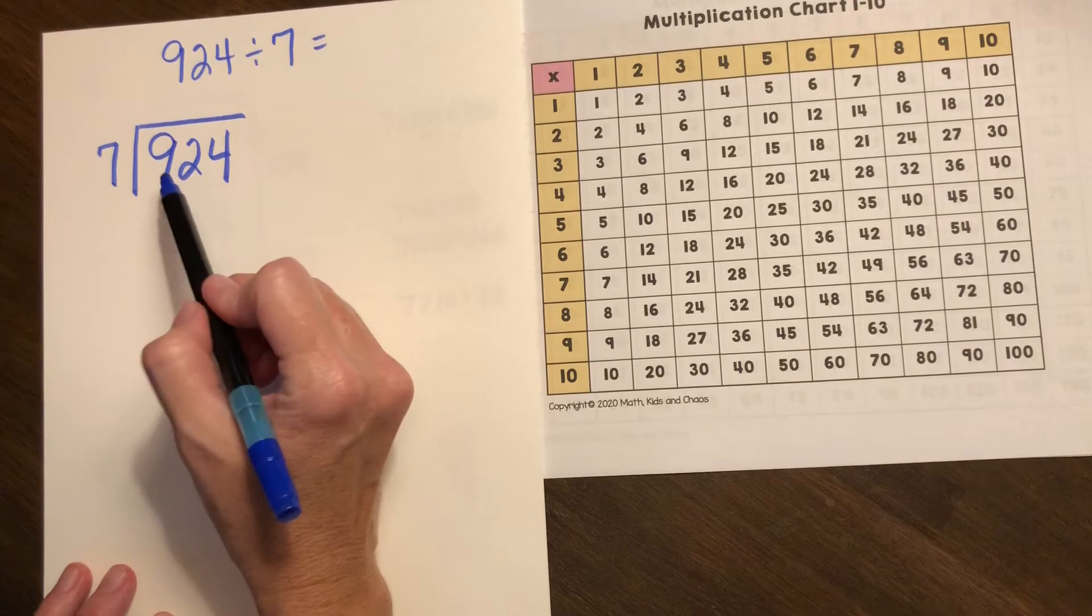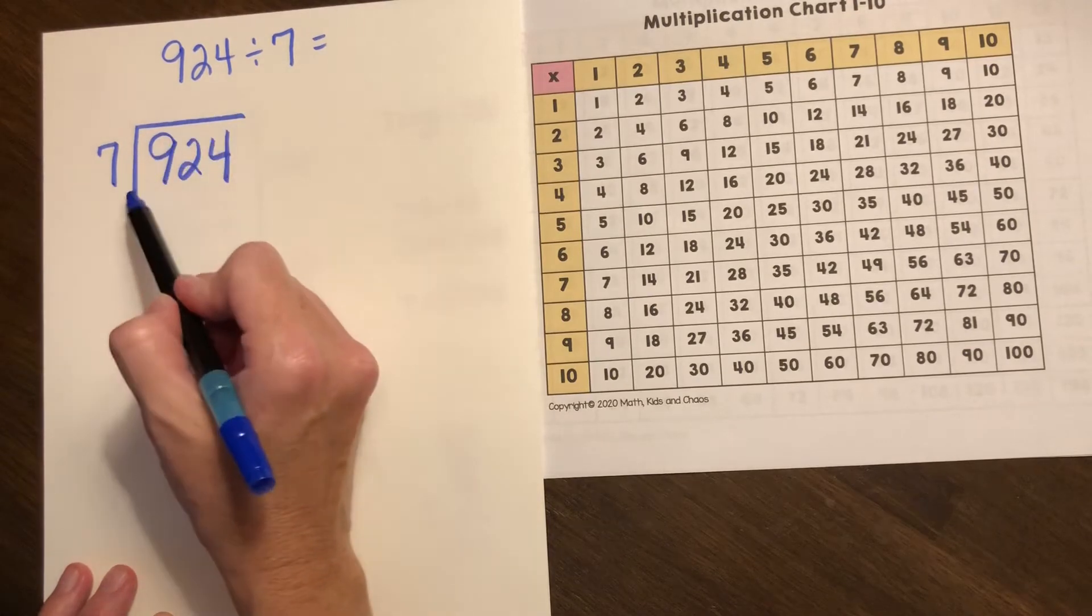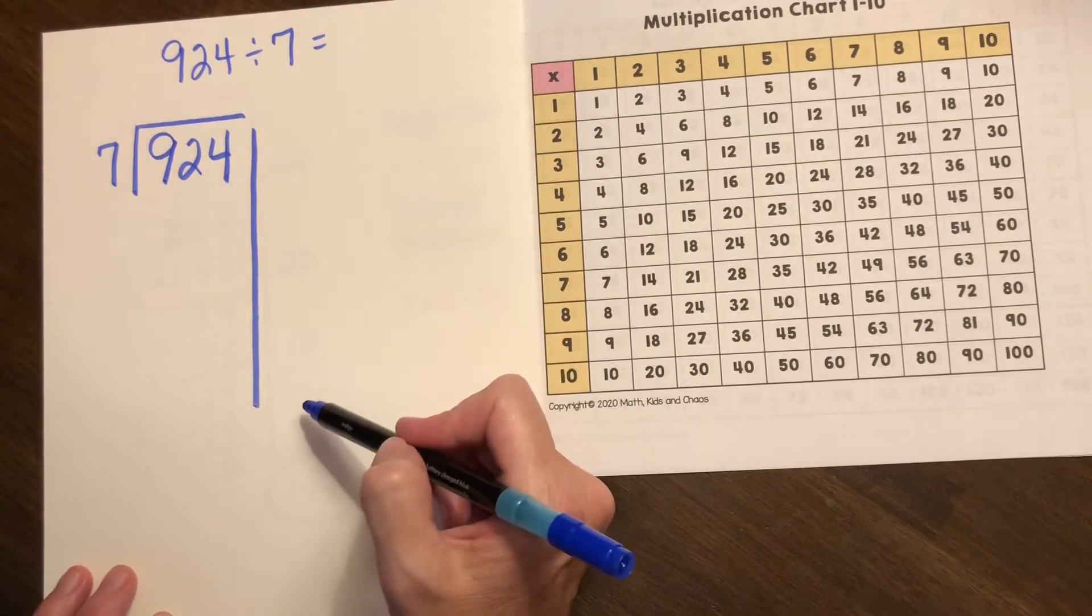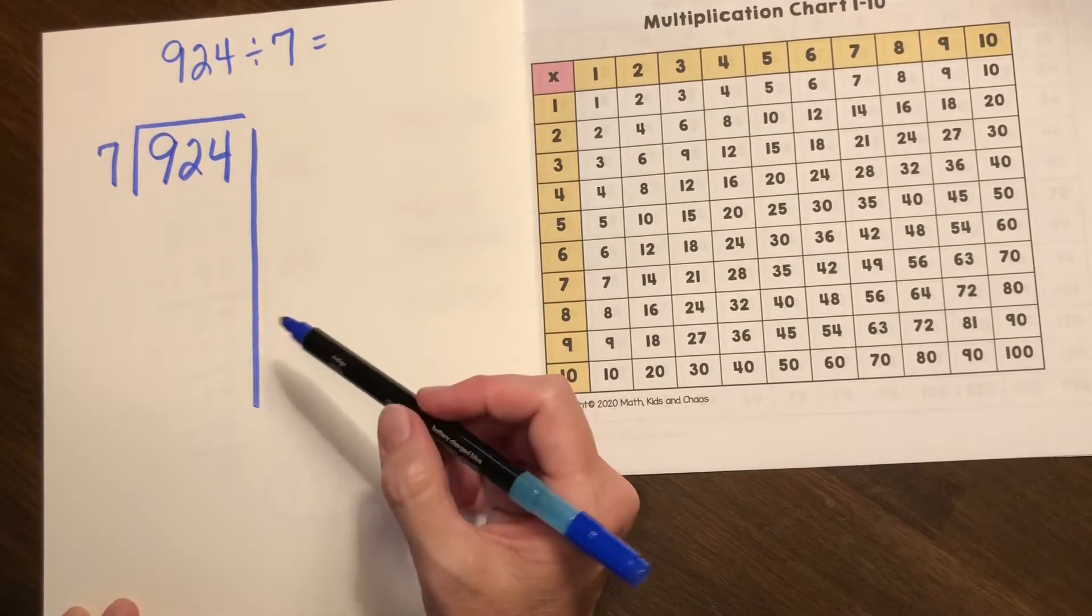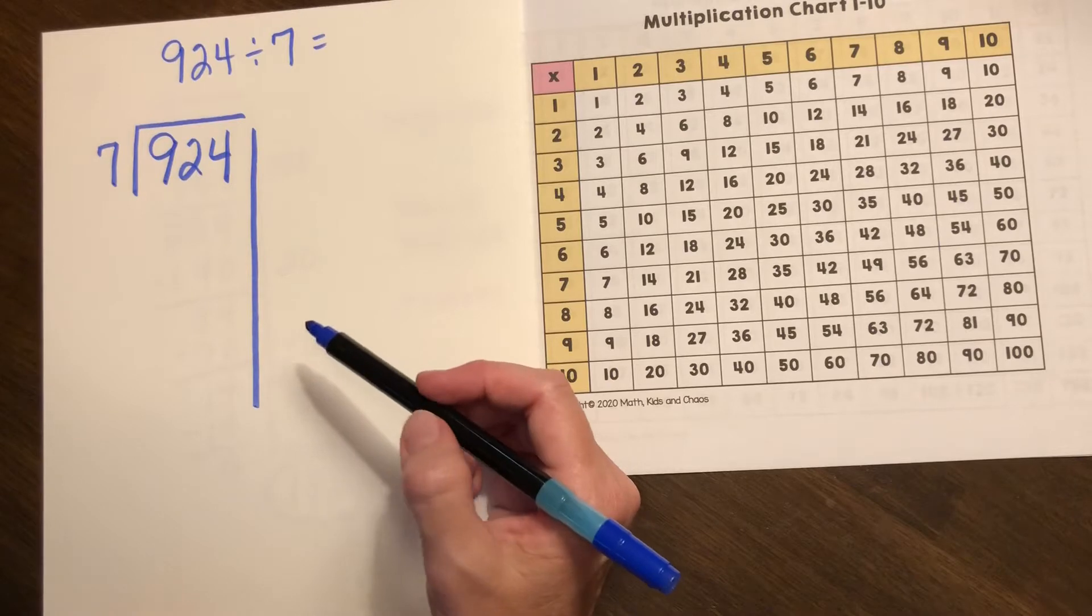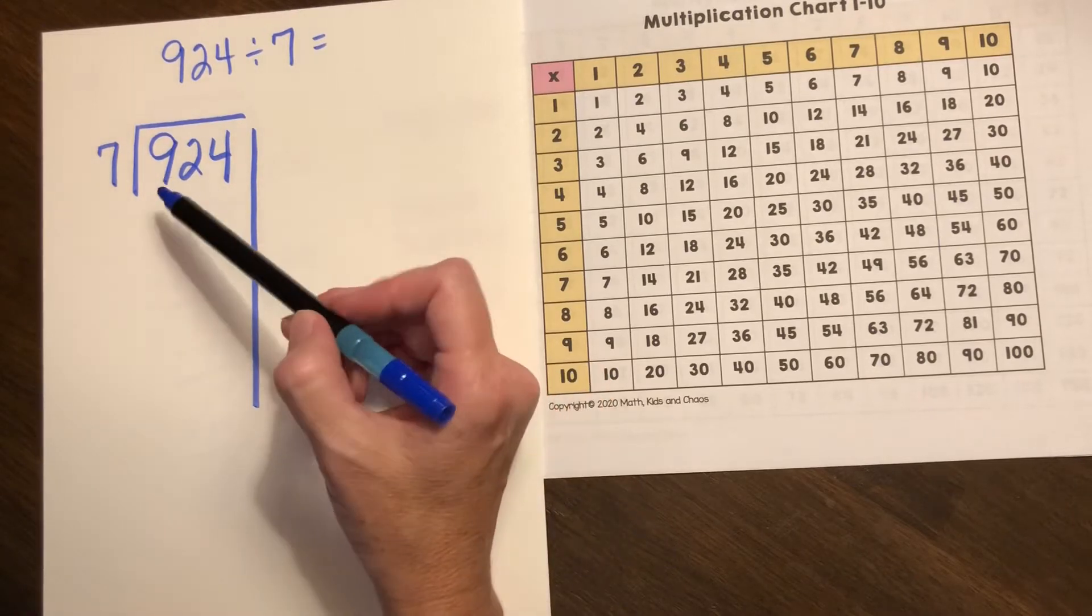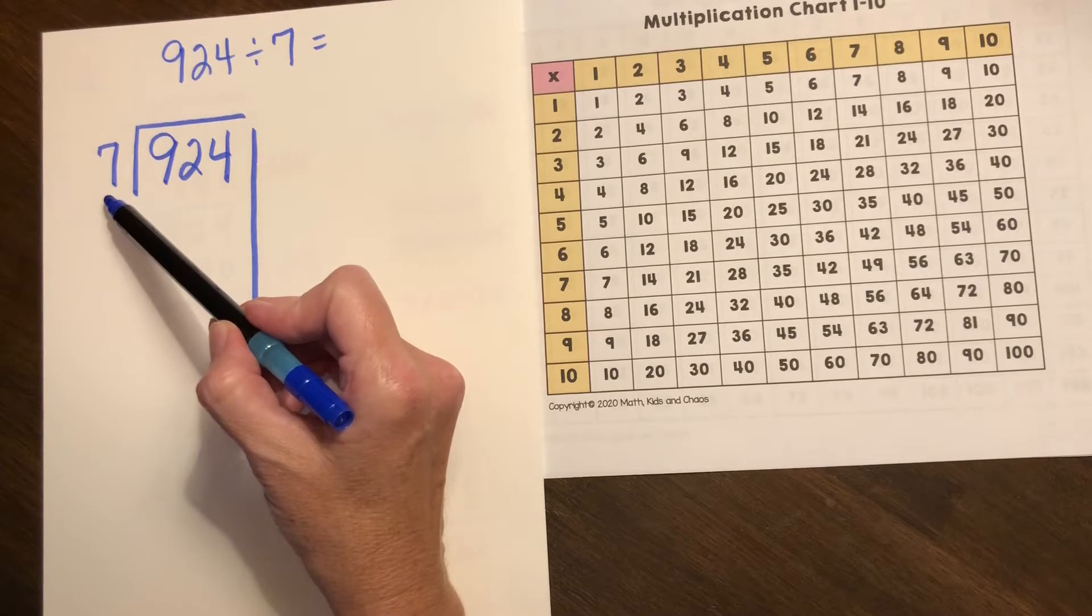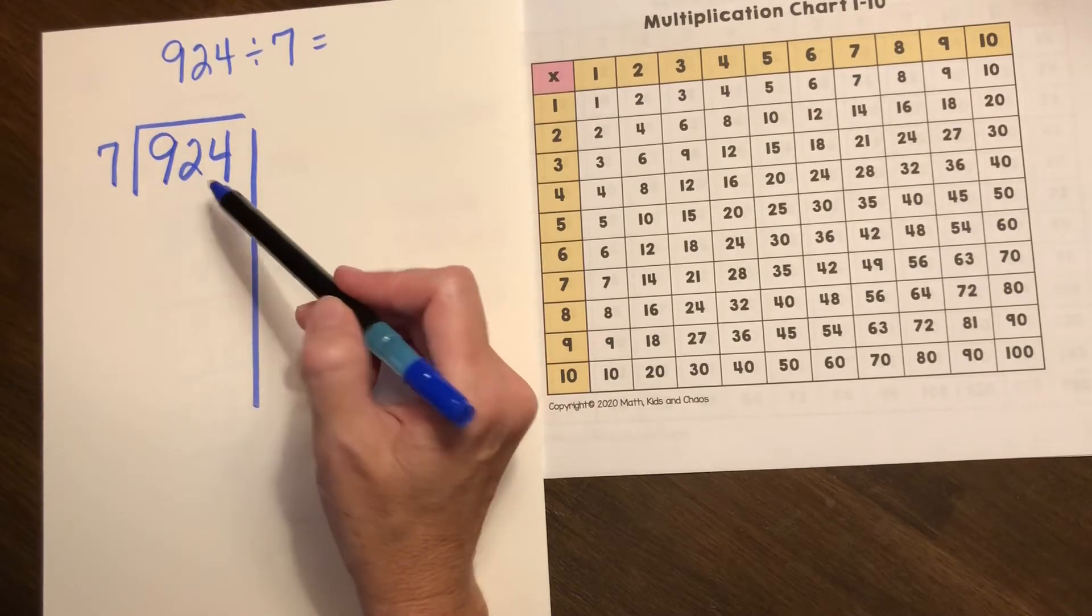So we divide it up: 924 divided by the divisor seven. I have my vertical line to separate my partial quotients. I'm going to use the friendly numbers and my understanding of multiplication to help me determine how many groups of seven can go into 924.